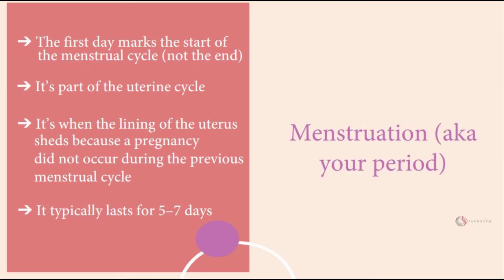The first day of your period marks the beginning of the menstrual cycle, not the end. For many of us it feels like everything is finally over, but it's actually just the very beginning of a series of incredible events throughout your cycle. Menstruation is when the lining of the uterus sheds, and that happens when a pregnancy does not occur during the previous menstrual cycle. Menstruation typically lasts 5 to 7 days, though it can vary based on a number of factors.